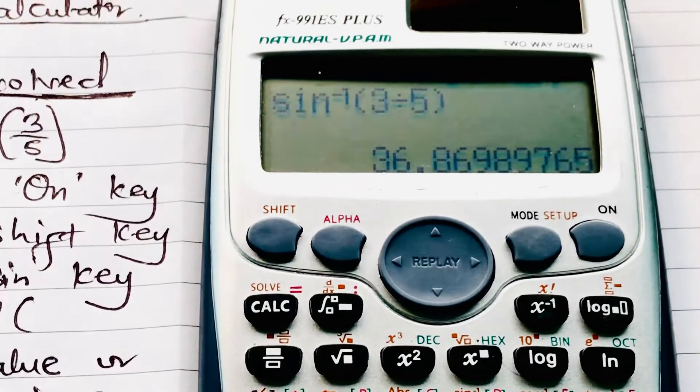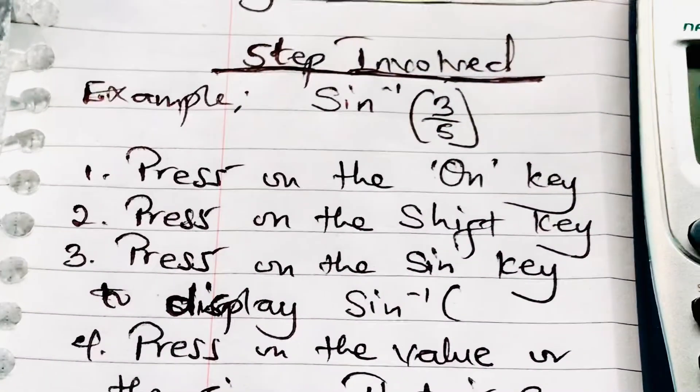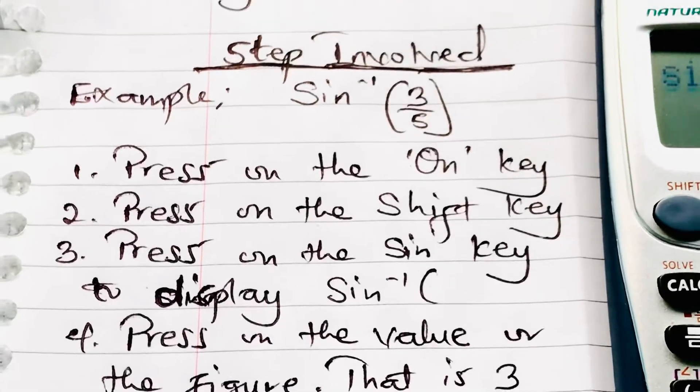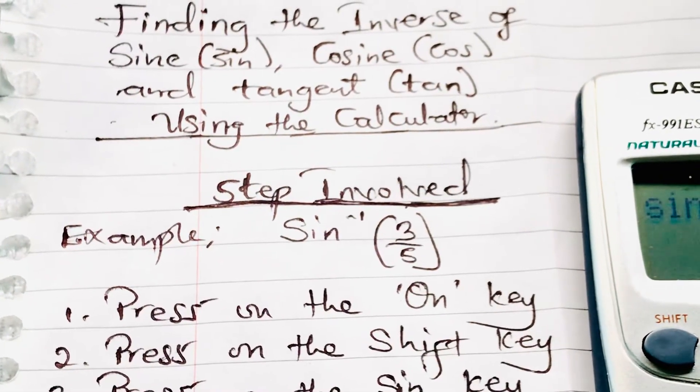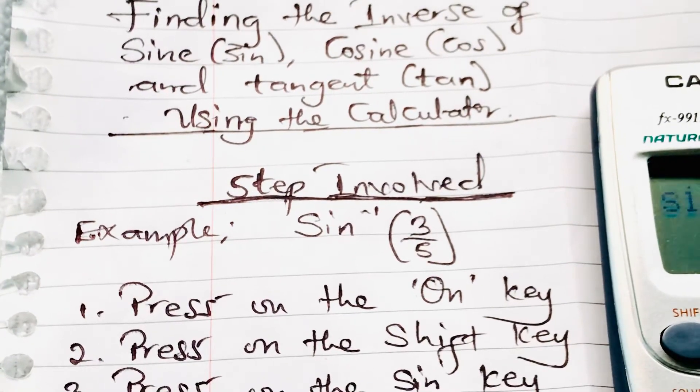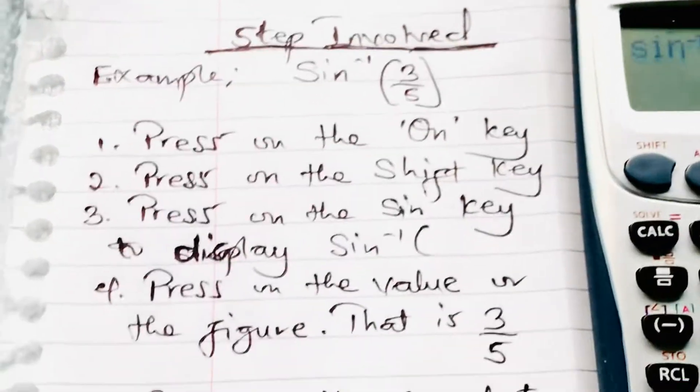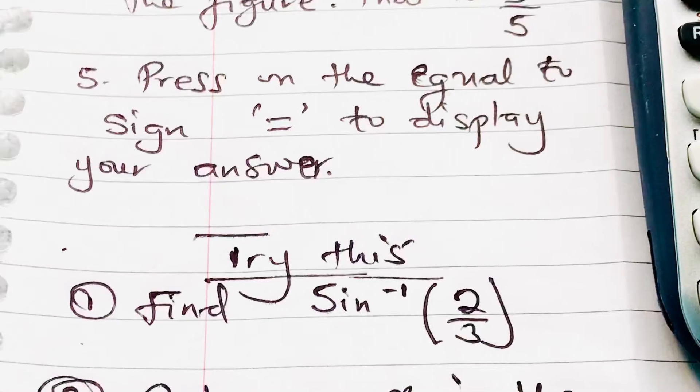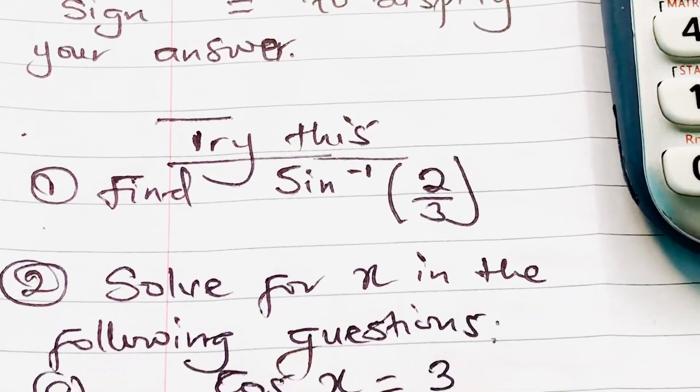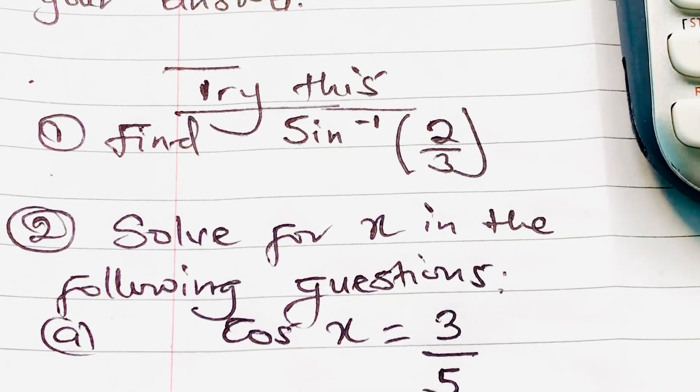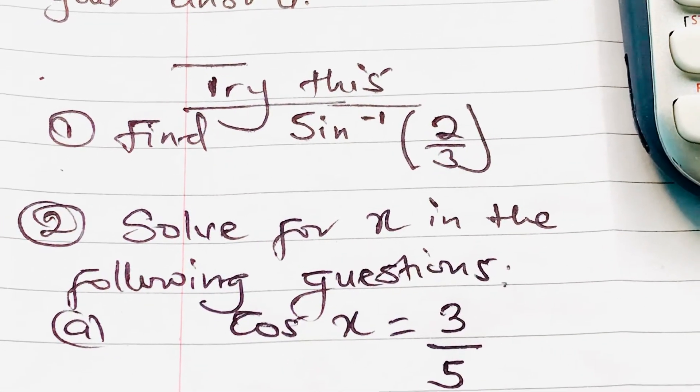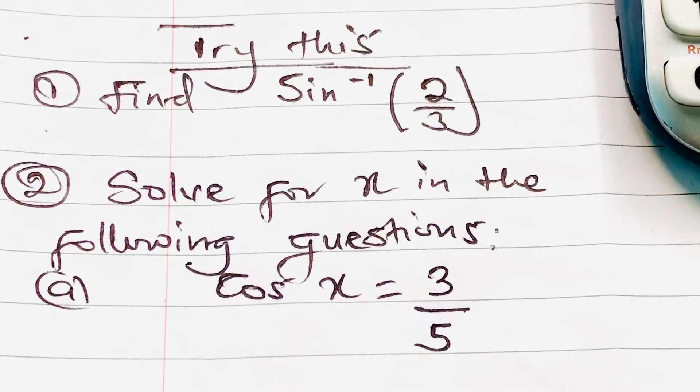We apply the same procedure when we are to find the inverse of the cosine and tangent. So I have some try examples here. The first one is, find sine inverse of 2 over 3.